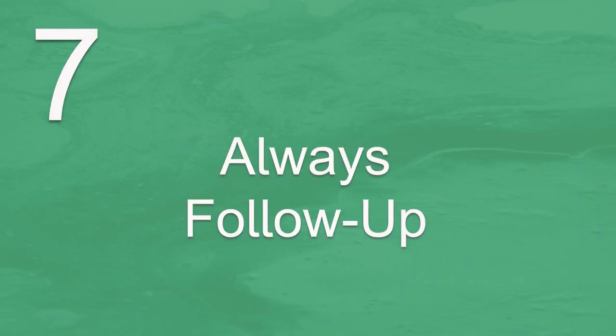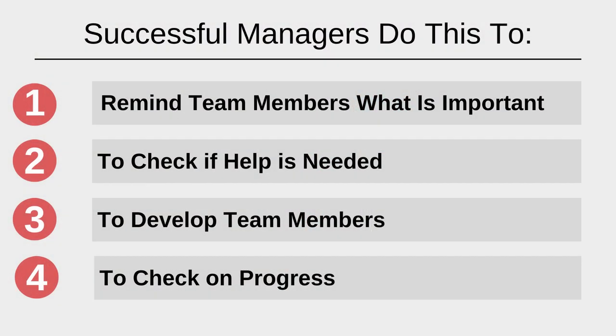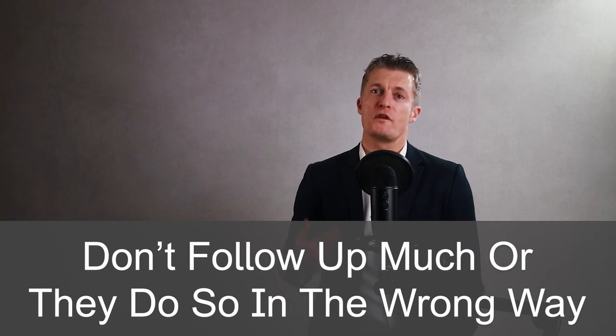The seventh factor in creating team accountability is to follow up. Successful managers spend time following up on the activities, tasks and problems that team members are working on. They do this: first, to remind team members what is important to you and the team; secondly, to check if help is needed — with creating solutions, with getting the right resources, etc.; third, to develop team members as opportunities to pass on skills and knowledge arise; and fourth, to check on progress. Less successful managers don't follow up much or they do so in the wrong way. Follow up to help and develop first and foremost, and follow up regularly.